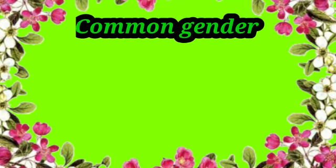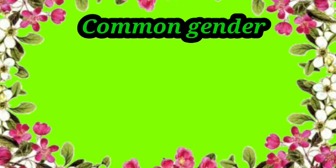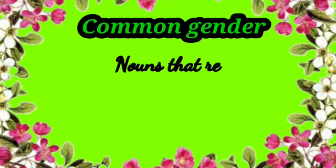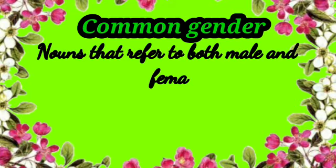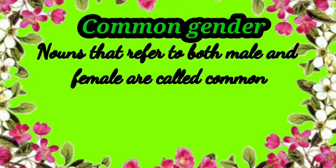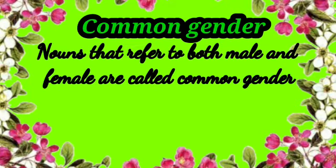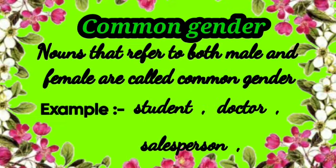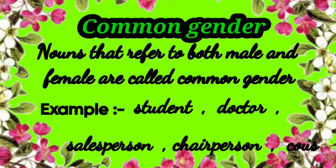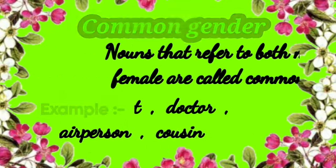Now comes the common gender. Nouns that refer to living things which are either male or female are said to be of the common gender. Examples: student, doctor, salesperson, chairperson, cousin and such more.